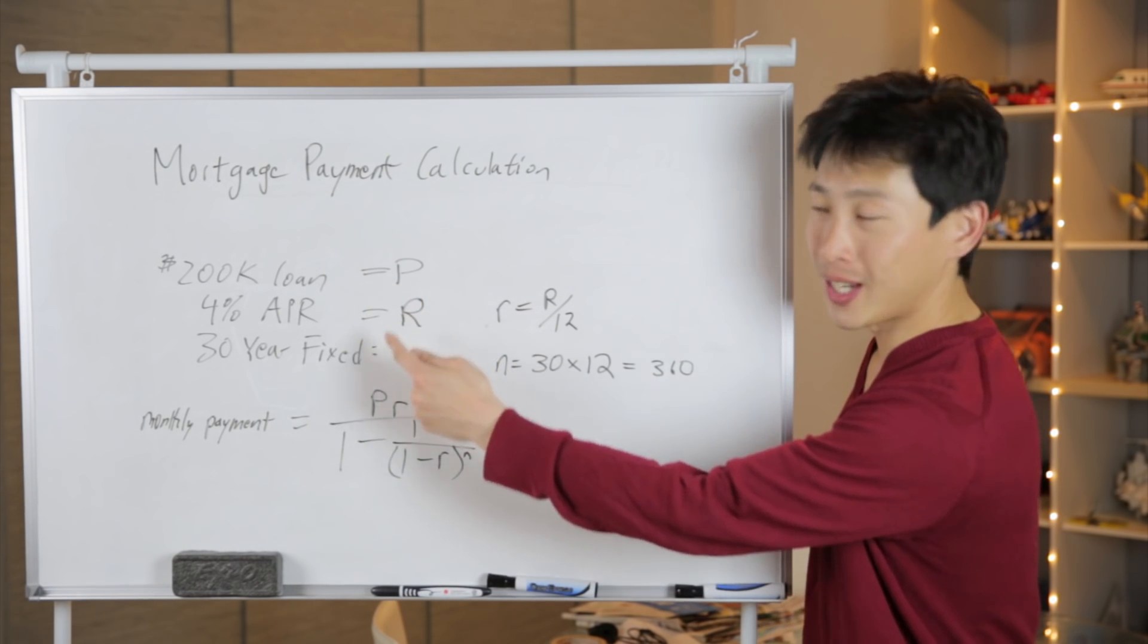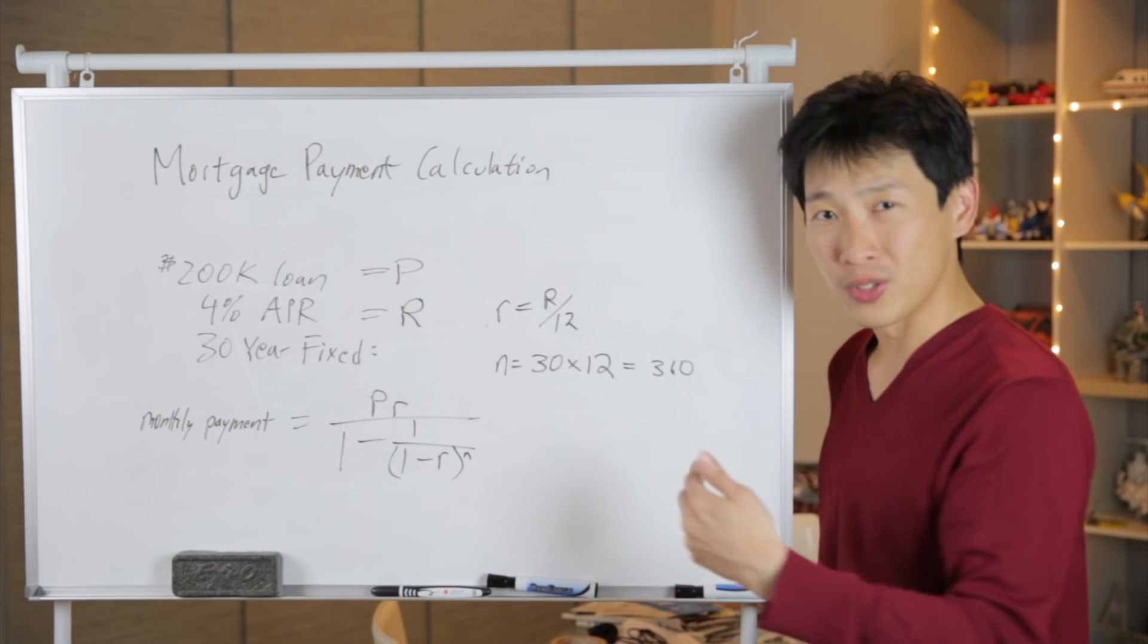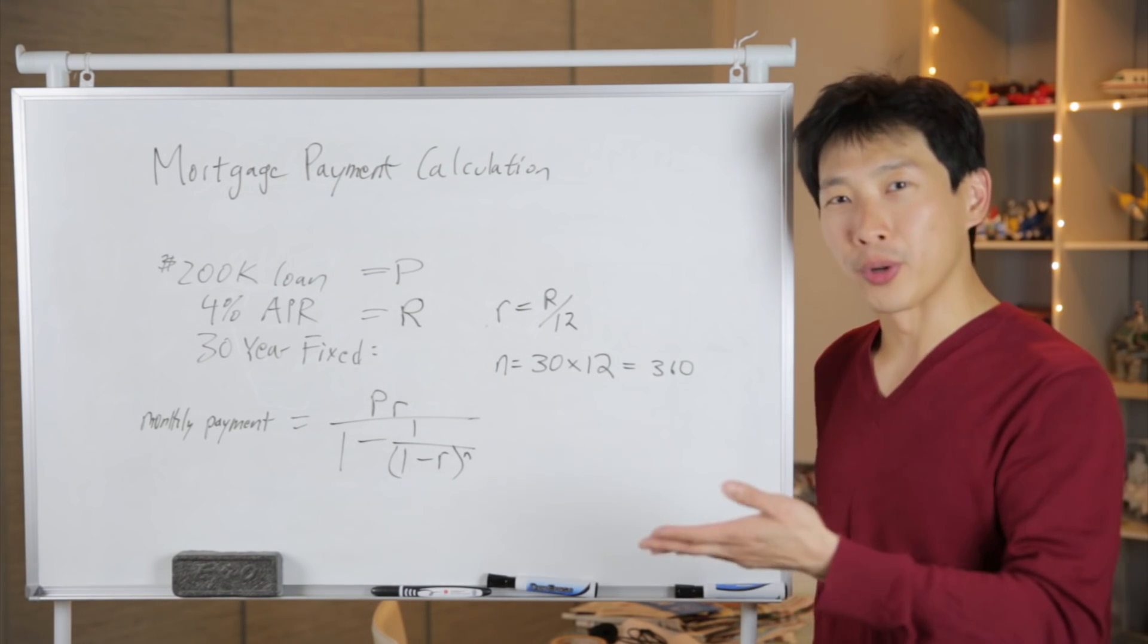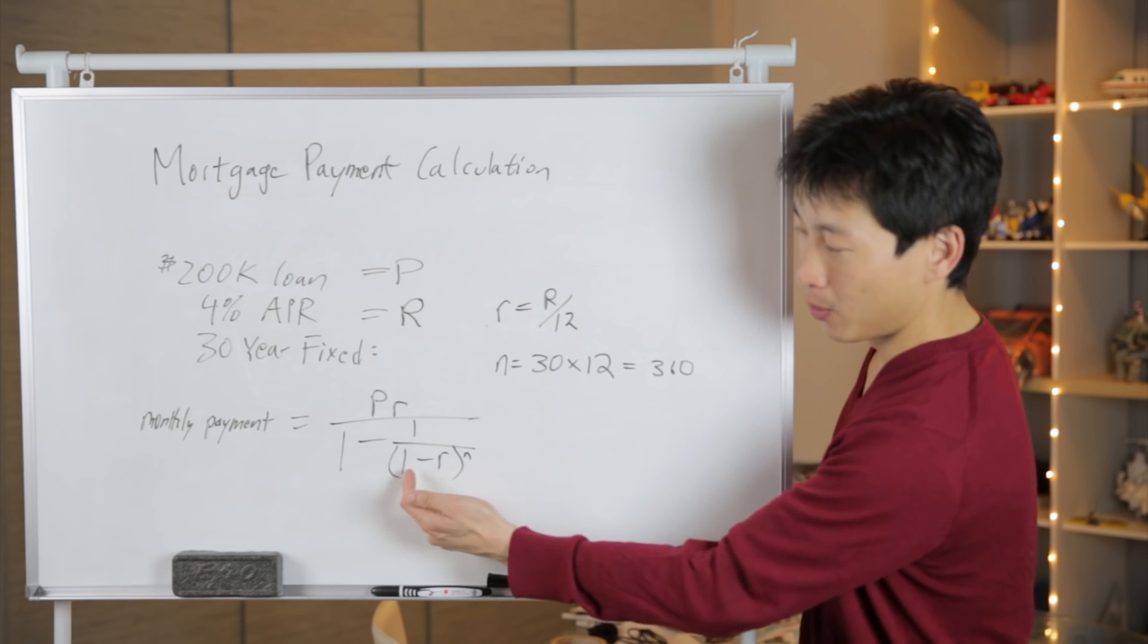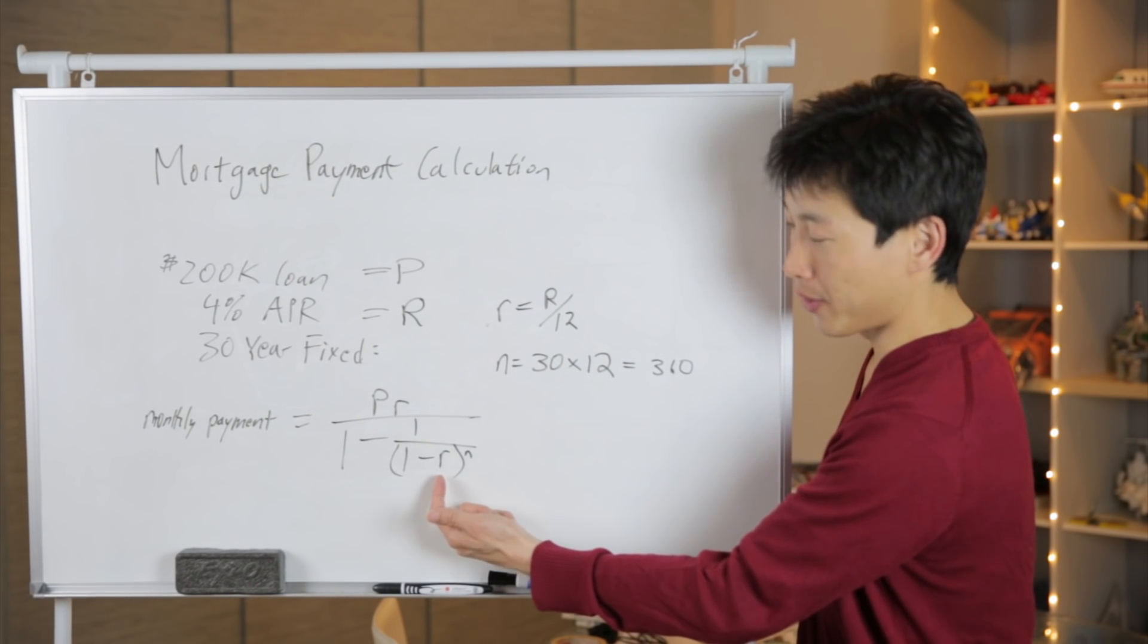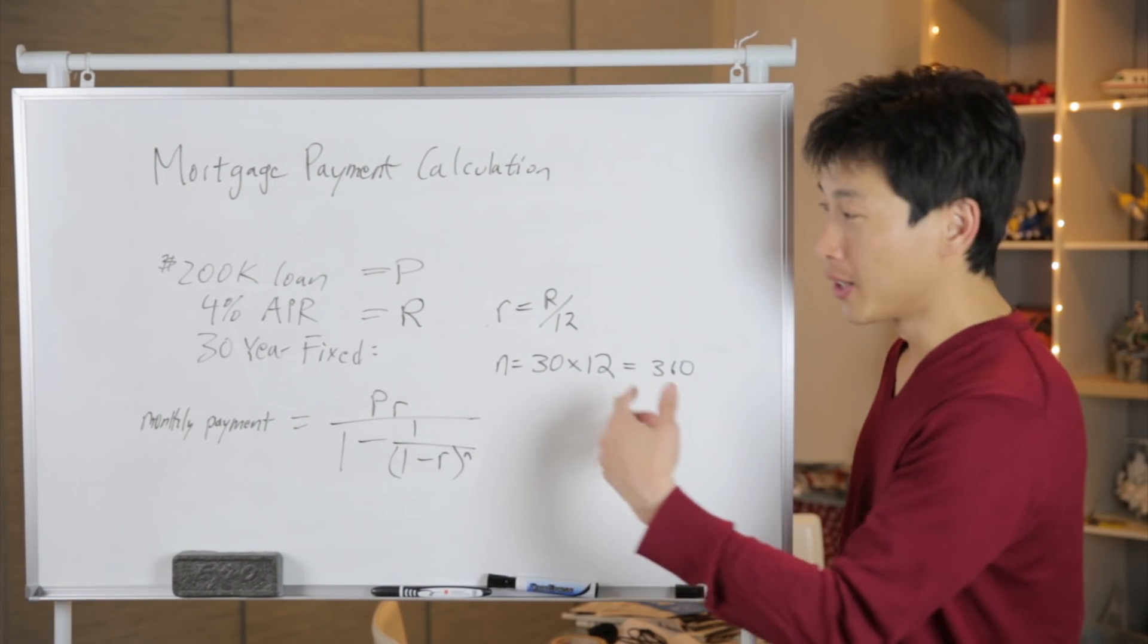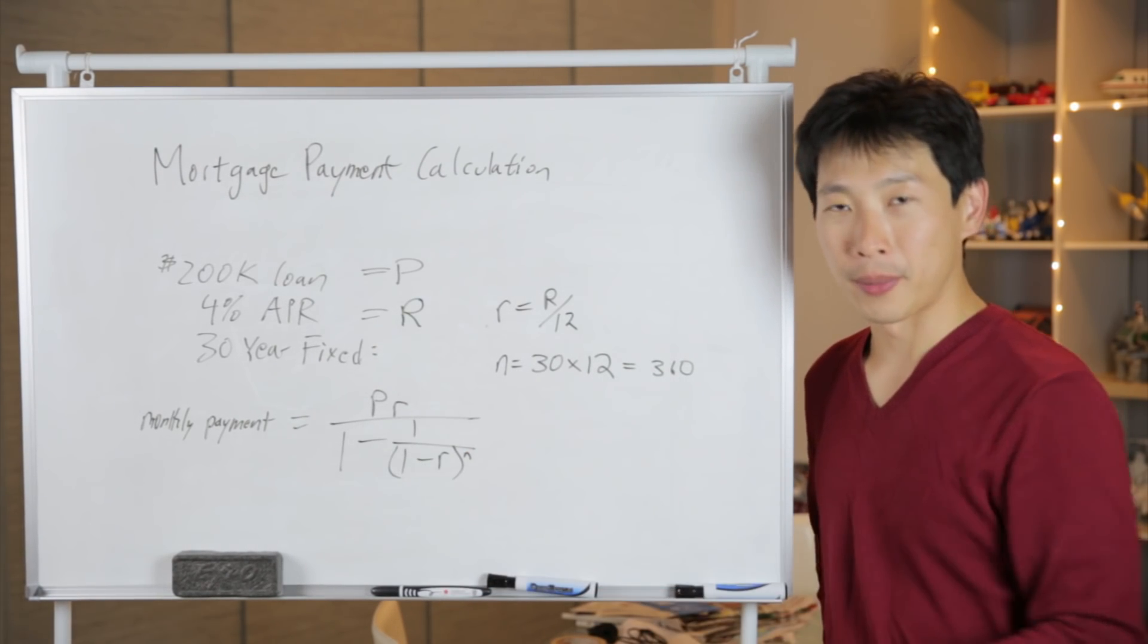So P is the $200,000 and then you multiply it by little r which is 4% divided by 12. So it's really 0.04 divided by 12. It's not 4 divided by 12. Because 4 is a percentage, that's why you use 0.04. And then all of this over 1 minus 1 divided by 1 minus r. R here is 0.04 divided by 12. And then all of this to the exponent of n which is 30 times 12 which is 360. When you work out this equation in some calculator or something, then it will give you the proper amount.